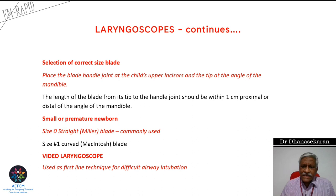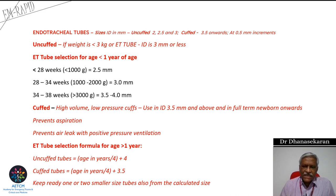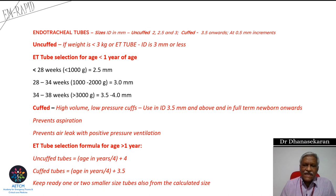An important accessory in your armamentarium should be a video laryngoscope. In cases where a difficult airway is anticipated, you can proceed directly to using the video laryngoscope. Endotracheal tubes are available in smaller sizes, in two versions: cuffed and uncuffed. Cuffed tubes are available from size 3.5 onwards.